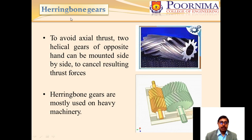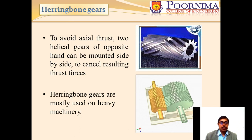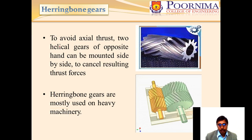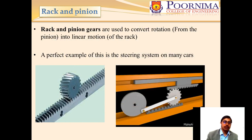The herringbone gear is a type of double helical gear. There are two types of helical gears: single helical and double helical. Since single helical gears produce axial thrust, to avoid this, two helical gears of opposite hand can be mounted side by side to cancel the resulting thrust forces. Herringbone gears are mostly used in heavy machinery.